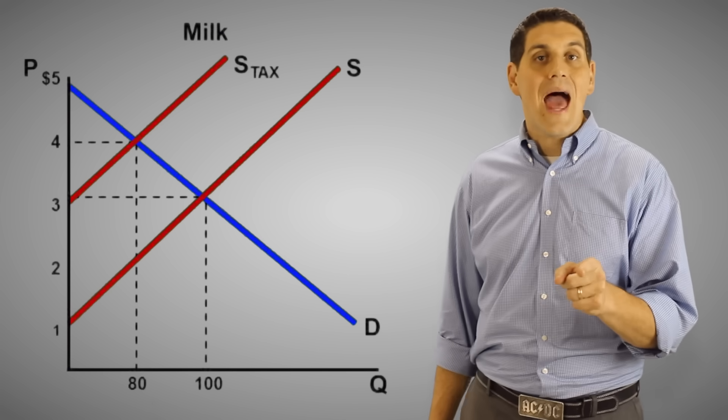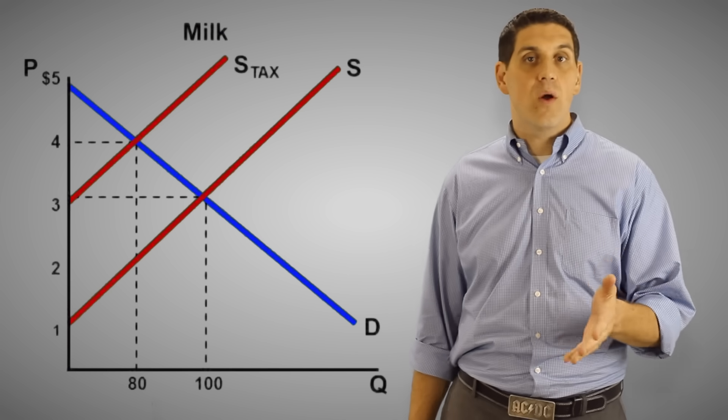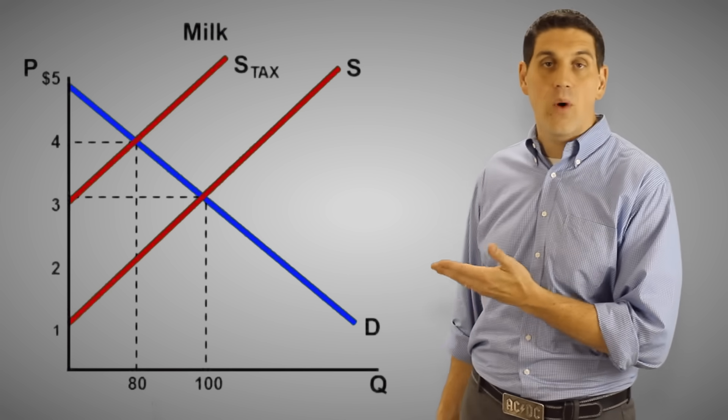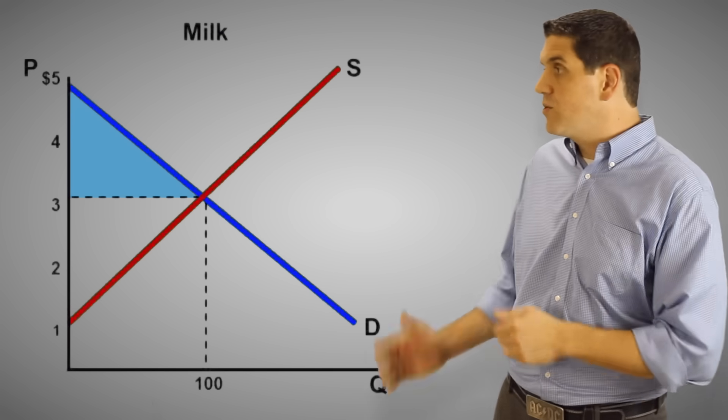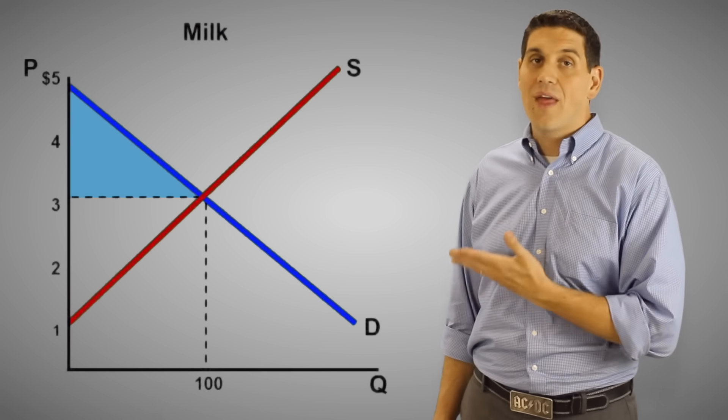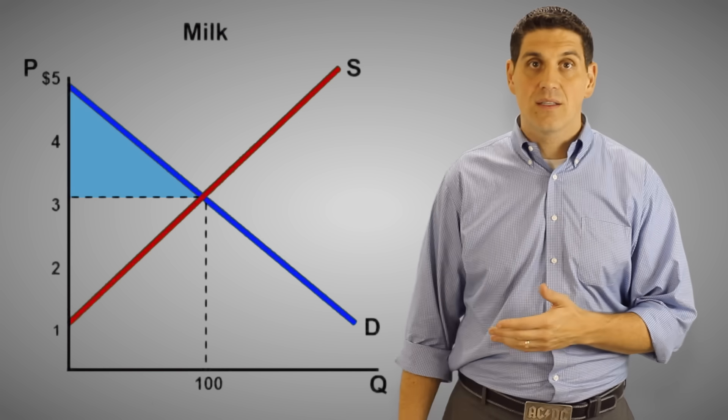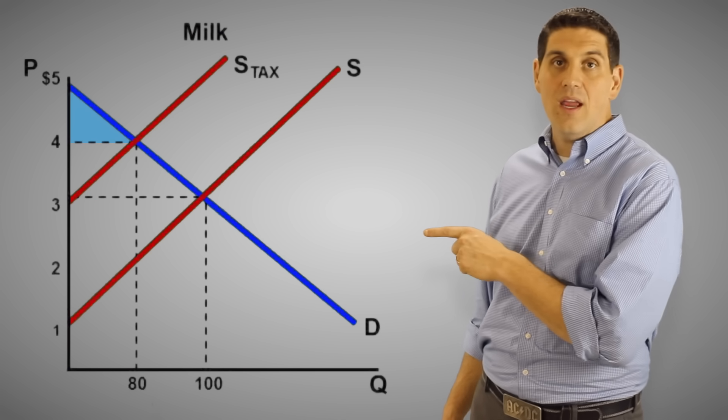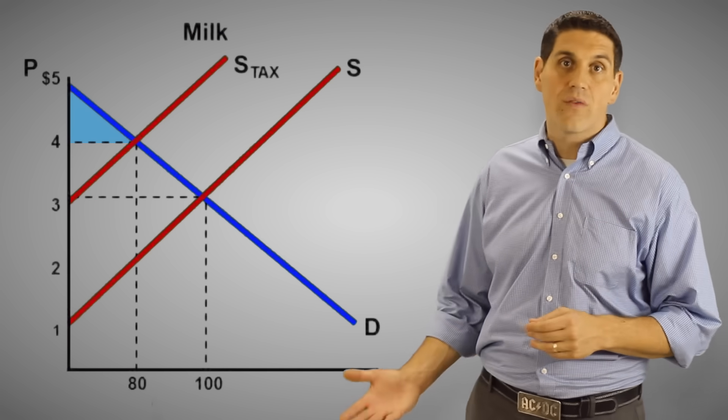Now let's ask a new question. What happened to consumer surplus when there was a shift in the supply and the price went up? Remember, consumer surplus is the difference between what people are willing to pay for something and what they actually did pay. So it's this triangle right here before the tax. After the tax, it's this triangle right here. When the price goes up, it screws over consumers.